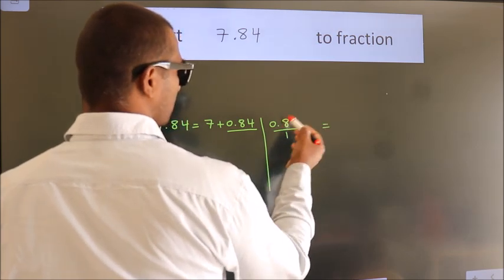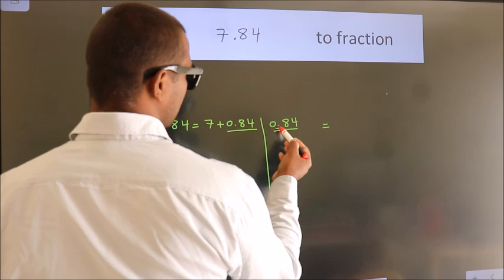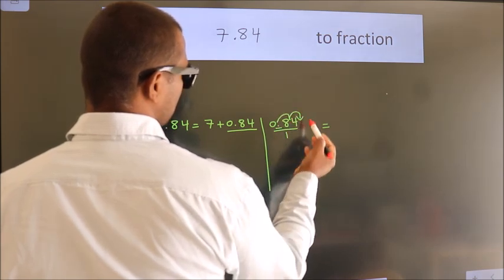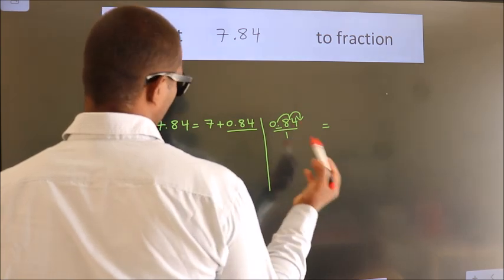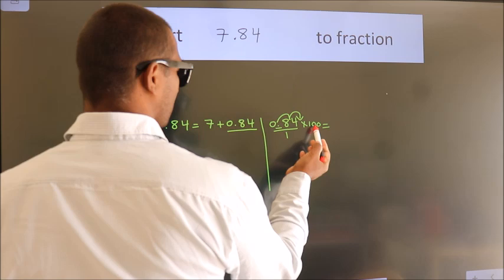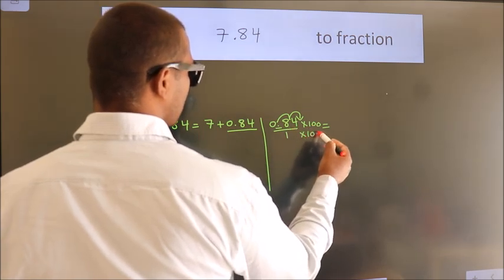To convert this to fraction, we have to move this decimal after two numbers. To move this decimal after two numbers, multiply it with 100. Whatever you are multiplying in the numerator, in the denominator also do the same.